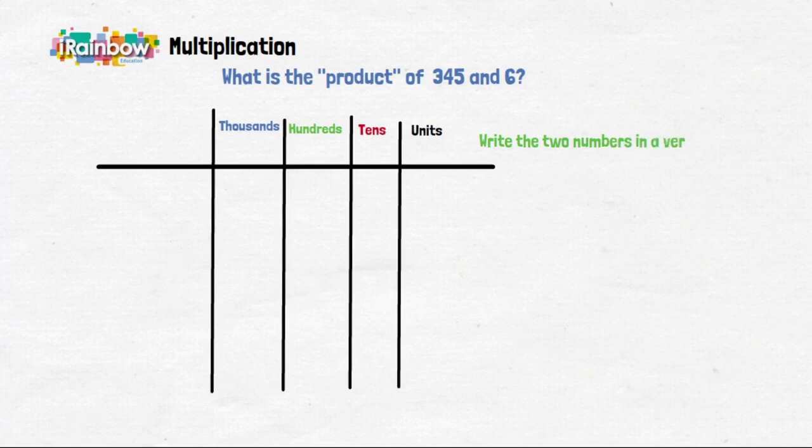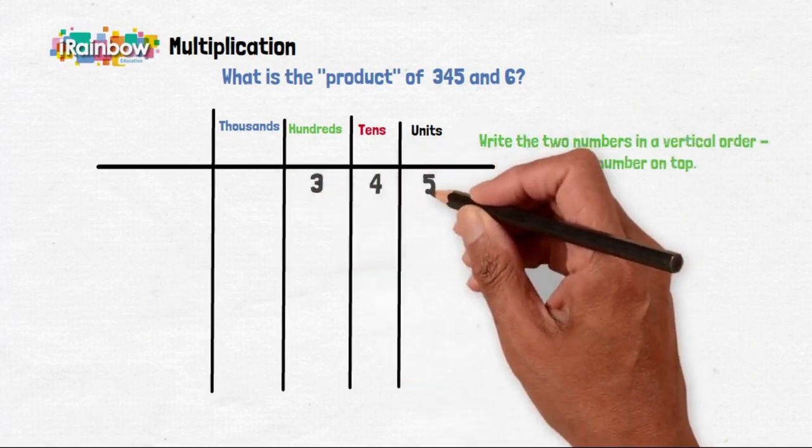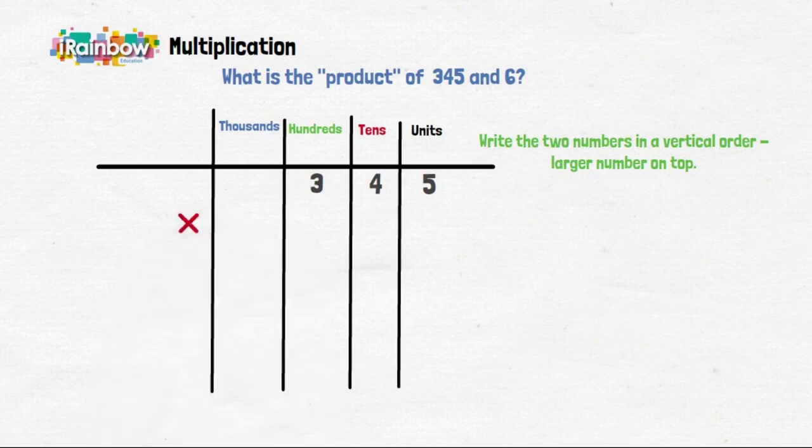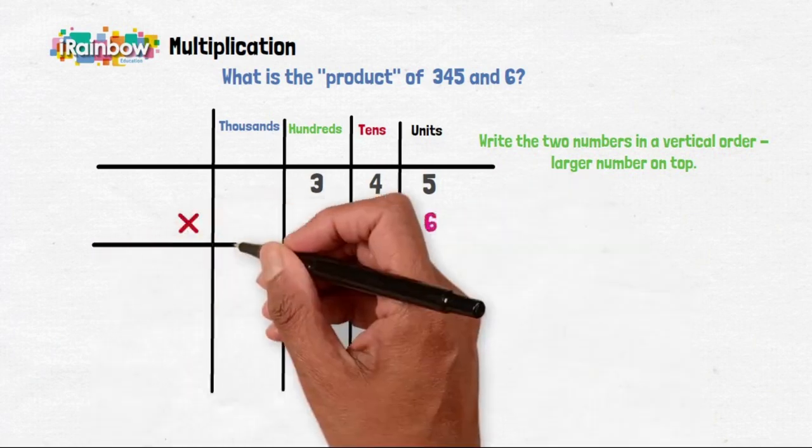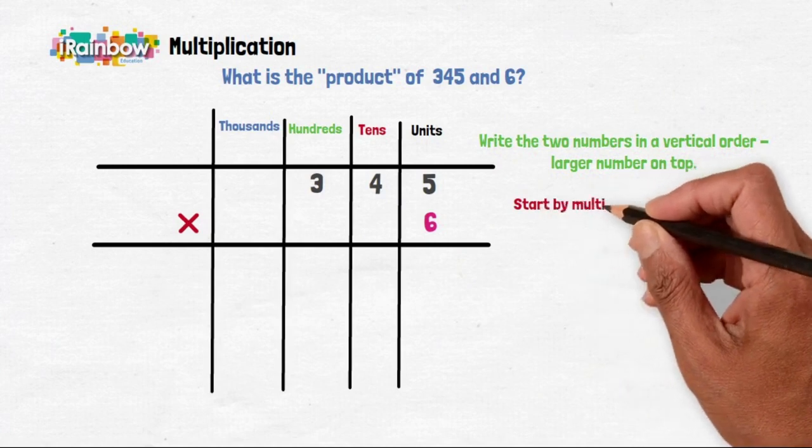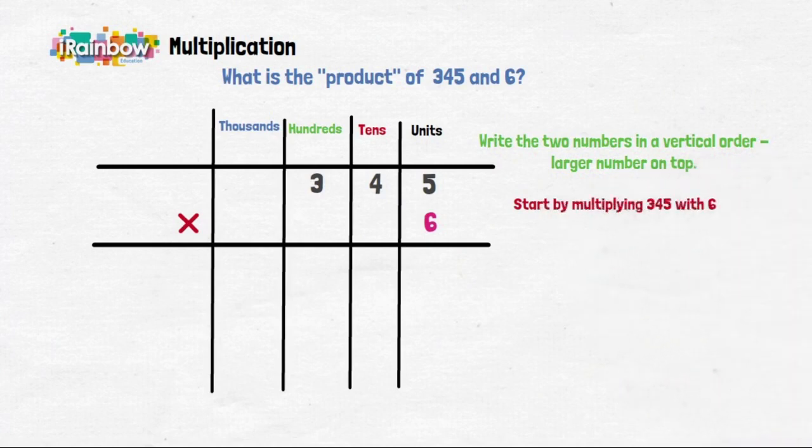Write the two numbers in vertical order with a larger number on top. Start by multiplying the units first. 5 times 6 is 30. Write your 30 down.